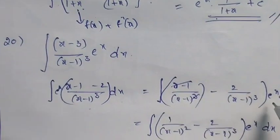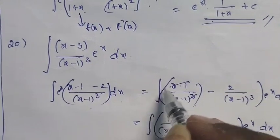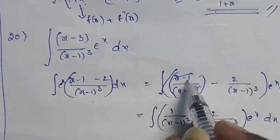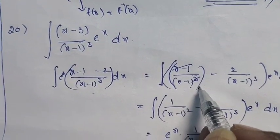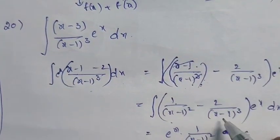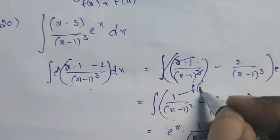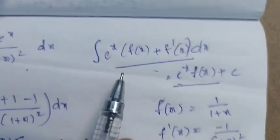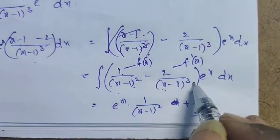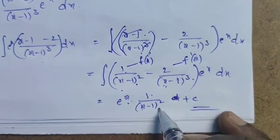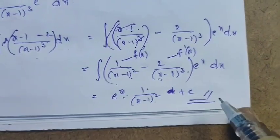Separating into fractions: (x − 1)/(x − 1)³ gives 1/(x − 1)², and then −2/(x − 1)³. So this is f(x) = 1/(x − 1)² and f'(x) = −2/(x − 1)³. This fits the formula e^x · [f(x) + f'(x)], so the answer is e^x · [1/(x − 1)²] + constant.